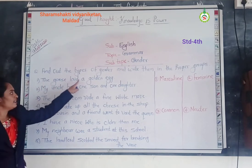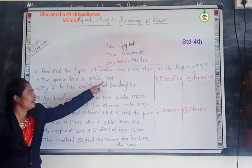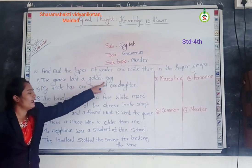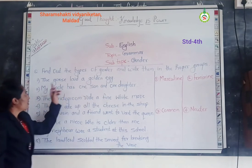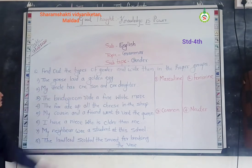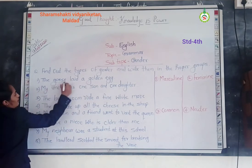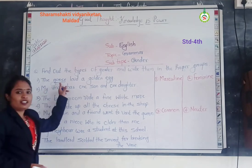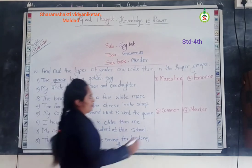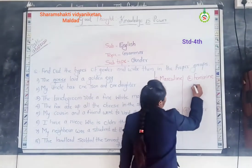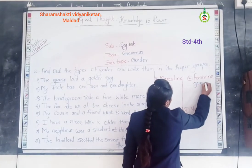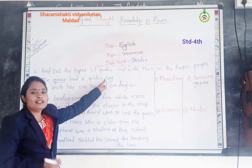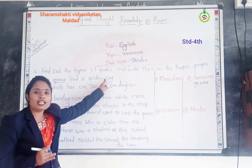The force laid the boulder A. In this sentence, 'Buse' is a feminine gender. And 'A' is a thing, so it is a neutral gender.